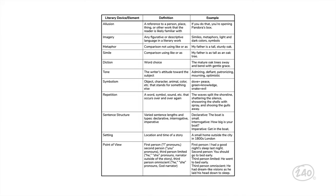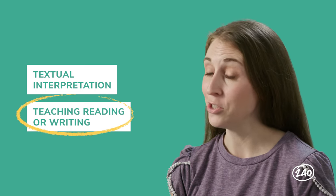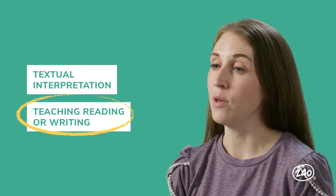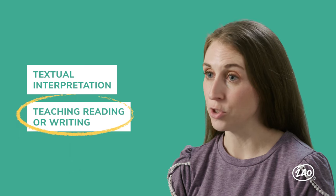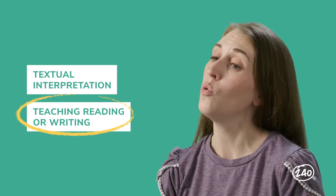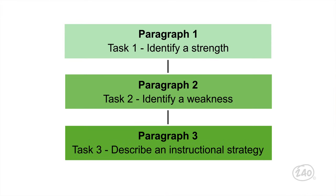Now let's talk about the teaching, reading, or writing question. This one requires you to put on your teaching hat. You'll be given a student's response to a reading or writing assignment. Then you will write an essay in which you answer three tasks: identify the student's strength, their weaknesses, and an instructional activity you would use either to target their weakness or build on their strength. Organize your paragraphs to match those three tasks — again, no introduction or conclusion necessary. Make sure the weakness you identify is significant, meaning it impacts their comprehension or the effectiveness of their writing, and is evident in more than one place in the student's response.